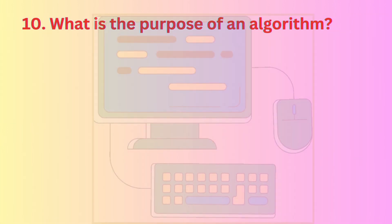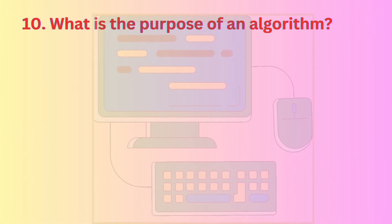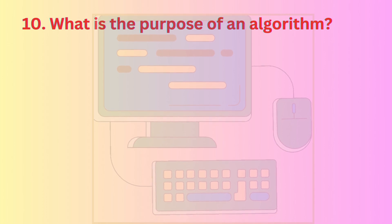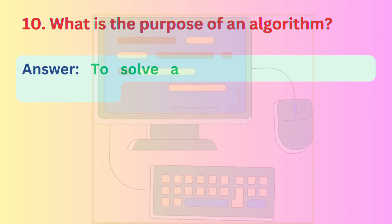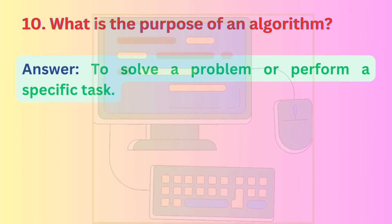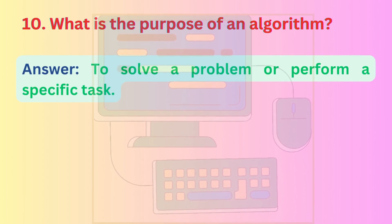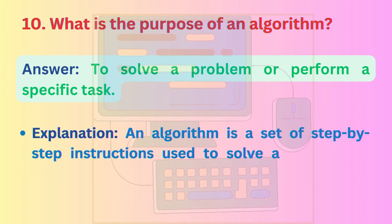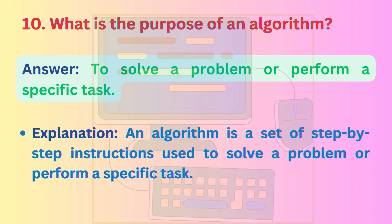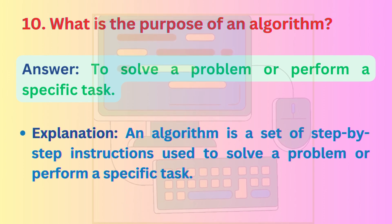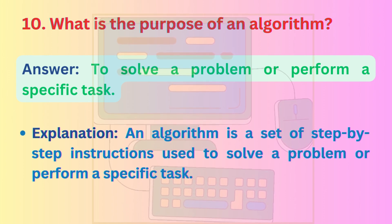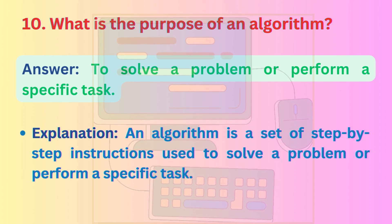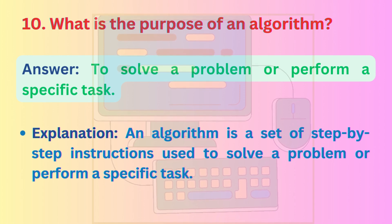Question 10: What is the purpose of an algorithm? Answer: To solve a problem or perform a specific task. Explanation: An algorithm is a set of step-by-step instructions used to solve a problem or perform a specific task.